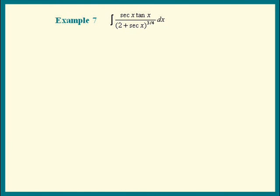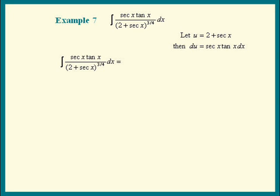What do we have raised to a power? We can see it in the denominator: 2 plus sec x. So let us let u equal 2 plus sec x. What's du? It's the derivative of u times dx. We get 0 plus sec x tangent x dx. Looking good, right? Let's plug u and du into our integrand.